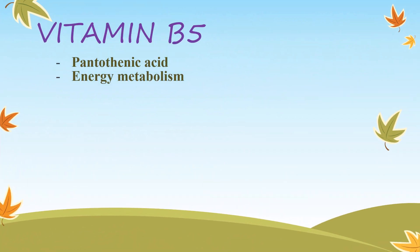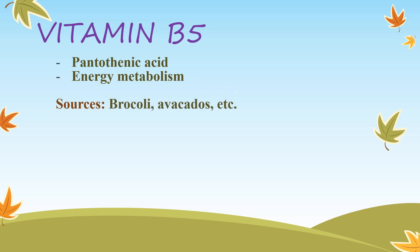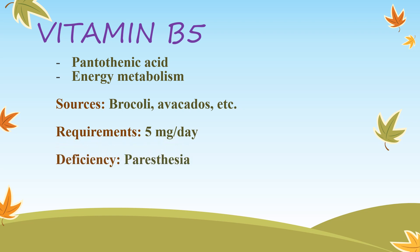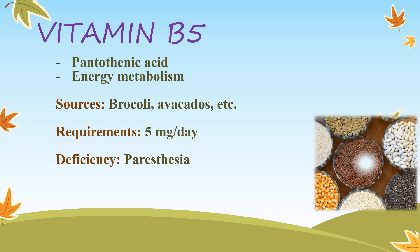Vitamin B5 — pantothenic acid — is a constituent of coenzyme A, which is important for acyl transfer. It is part of an enzyme needed for energy metabolism. Sources: meat, broccoli, avocado, etc. Recommended daily allowances: 5 mg per day; for pregnancy and lactation, the amount increases to 6 mg and 7 mg daily respectively. Deficiency causes paresthesia — a burning or prickling sensation usually felt in the hands, arms, legs, or feet, but can also occur in other parts of the body. Overdose leads to diarrhea, possibly nausea and heartburn.